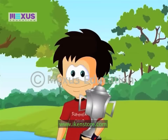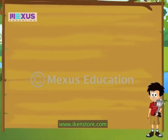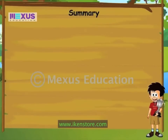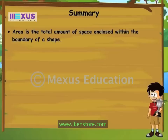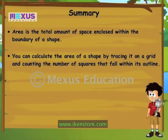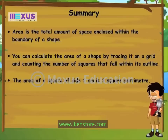Summer camp's over now. I have to go and say bye to my friends. But before I go, let me tell you what I learnt about area. Area is the total amount of space enclosed within the boundary of a shape. You can calculate the area of a shape by tracing it on a grid and counting the number of squares that fall within its outline. The area of a square of side one centimeter is one square centimeter.